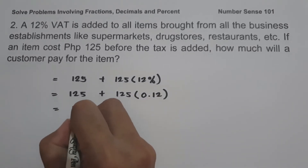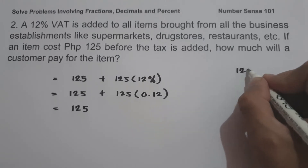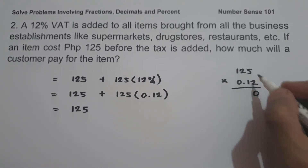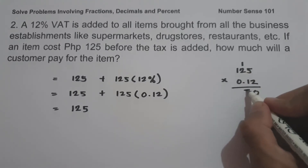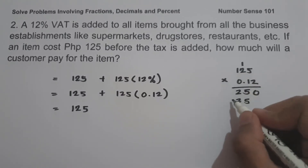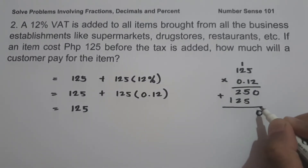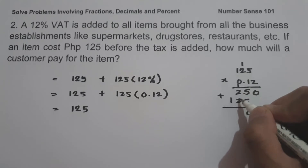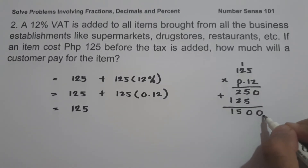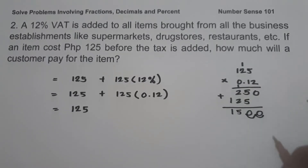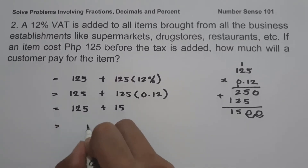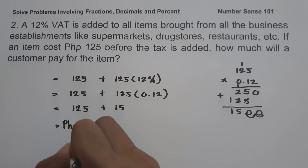So let us multiply 125 times 0.12. Working through the multiplication: 2 times 5 is 10, carry 1; 2 times 2 is 4 plus 1 is 5; 2 times 1 is 2; then 1 times 5 is 5, 1 times 2 is 2, 1 times 1 is 1. Adding the partial products and placing two decimal places, we get 15. So 12 percent of 125 is 15. Therefore 125 plus 15 is 140 pesos, and this will be our answer.